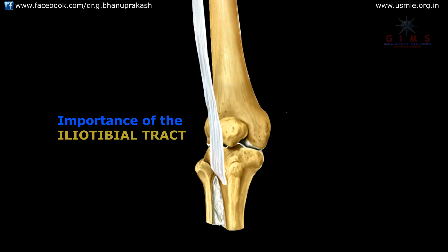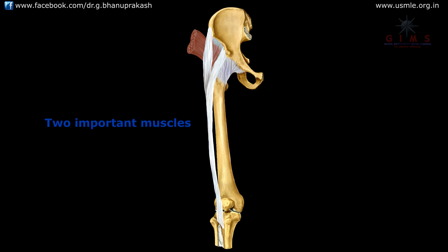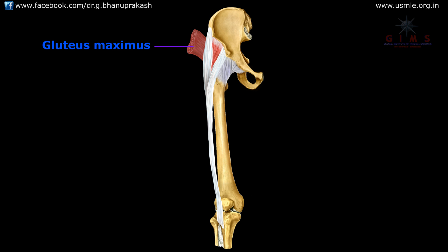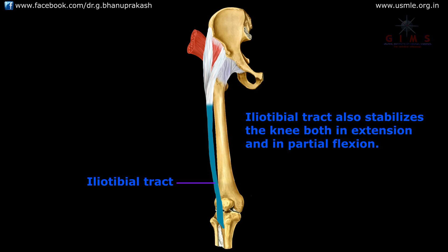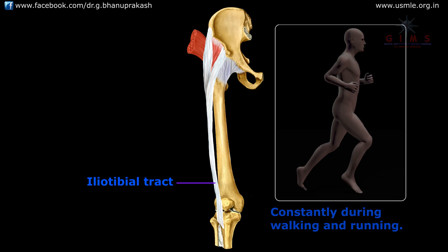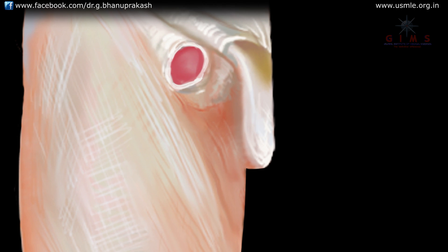Now let us see the importance of the iliotibial tract. Two important muscles are inserted into its upper part, that is between the superficial and deep lamina. These are the three-fourth part of the gluteus maximus and the tensor fasciae latae. The iliotibial tract also stabilizes the knee both in extension and in partial flexion, and is therefore used constantly during walking and running.